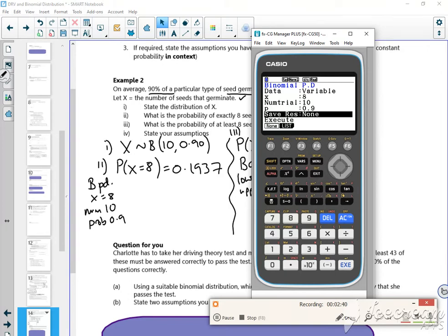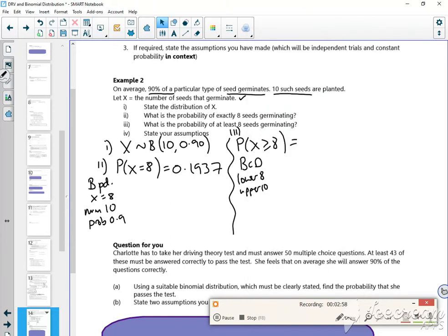So I'll stick in the calc, so I need to press exit, exit, distribution, binomial, BCD, lower is 8, upper 10, 10, 0.9. So 0.9298. Hang on, I've lost my answer. So 0.9298.